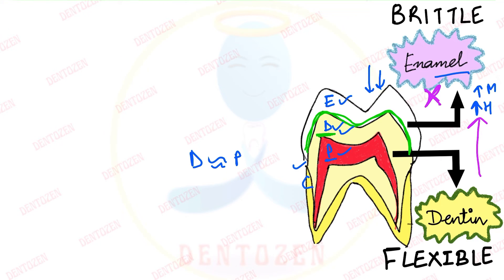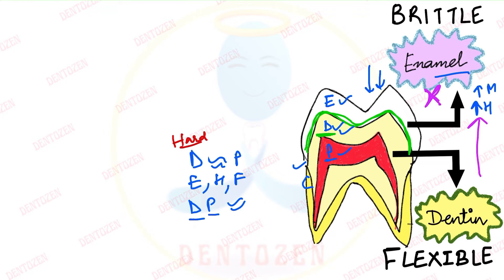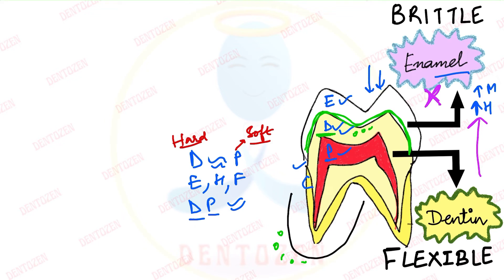Dentine and pulp are related embryologically, histologically, and functionally, as they are both derived from dental papilla cells from tooth development. However, they are discussed separately because dentine is a hard tissue whereas pulp is a soft tissue. Also, some proteins found in bone can also be seen in dentine, so some properties of dentine are similar to bone.